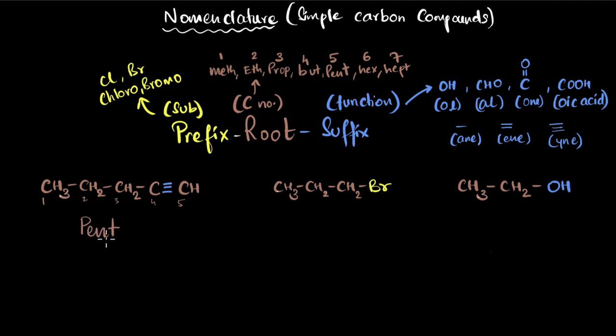And now for the suffix to end, I will check for the functional group. We can see we don't have any attached functional group, but we do have a triple bond that itself becomes a functional group. So the triple bond ends with ine, and so we'll call this pentyne. And there you go. That is the nomenclature of this compound. Why don't you pause and try filling these two up?